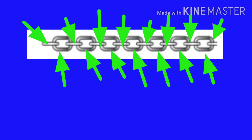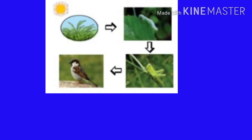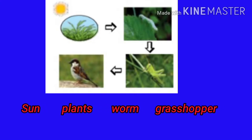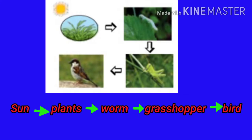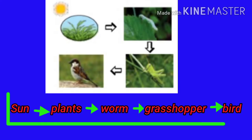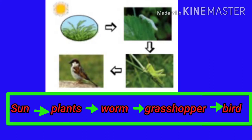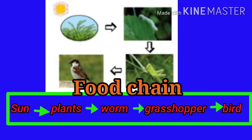Look at this picture — there are several links in the chain. If the links were to separate from each other, could they be called a chain? Even though each link is a complete object, it is joined to the links before and after it. If any link comes loose, the chain is broken. In the picture above we can see the sun, some plants, a worm, a grasshopper, and a bird. They are all connected. Each of the components — plants, worm, grasshopper, bird — is food for the next one. That is why we say they form a chain. Such a chain is called a food chain. Each of these components is a link in a food chain.